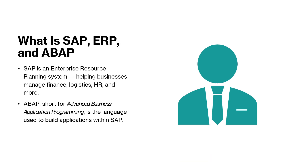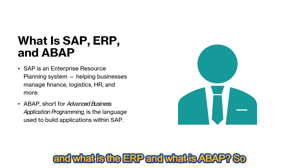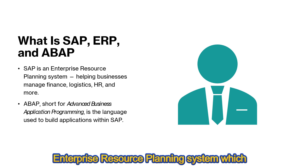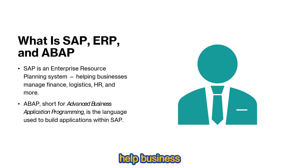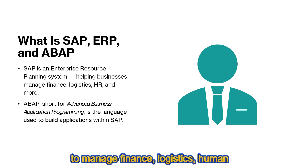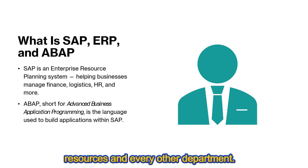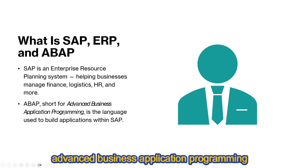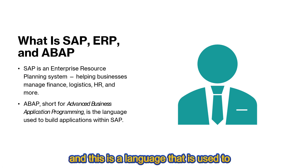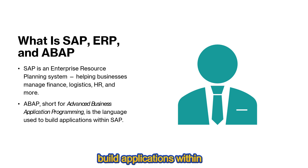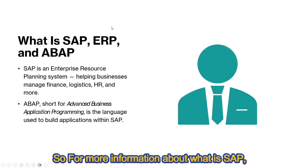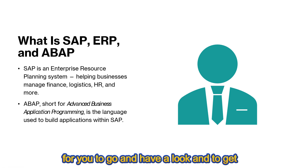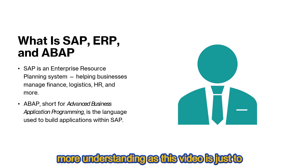A brief introduction: what is SAP, what is ERP, and what is ABAP? SAP means enterprise resource planning — a system that helps businesses manage finance, logistics, human resources, and every other department. ABAP stands for Advanced Business Application Programming, the language used to build applications within the SAP system. I'll leave a link in the description for more detail on these concepts.